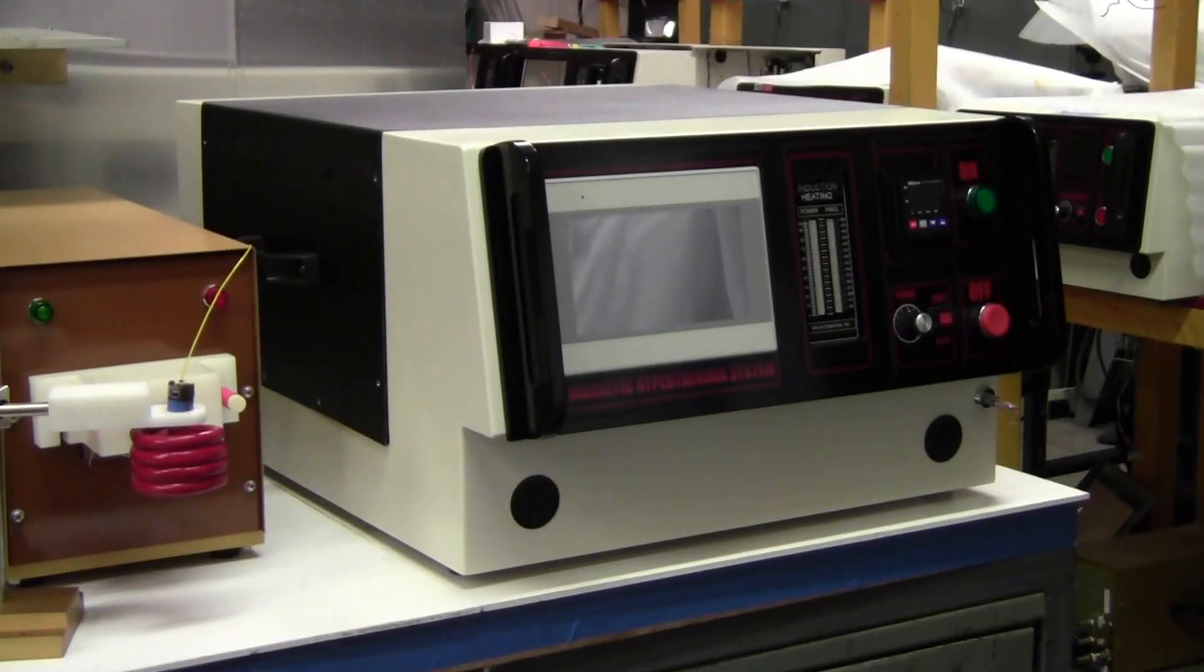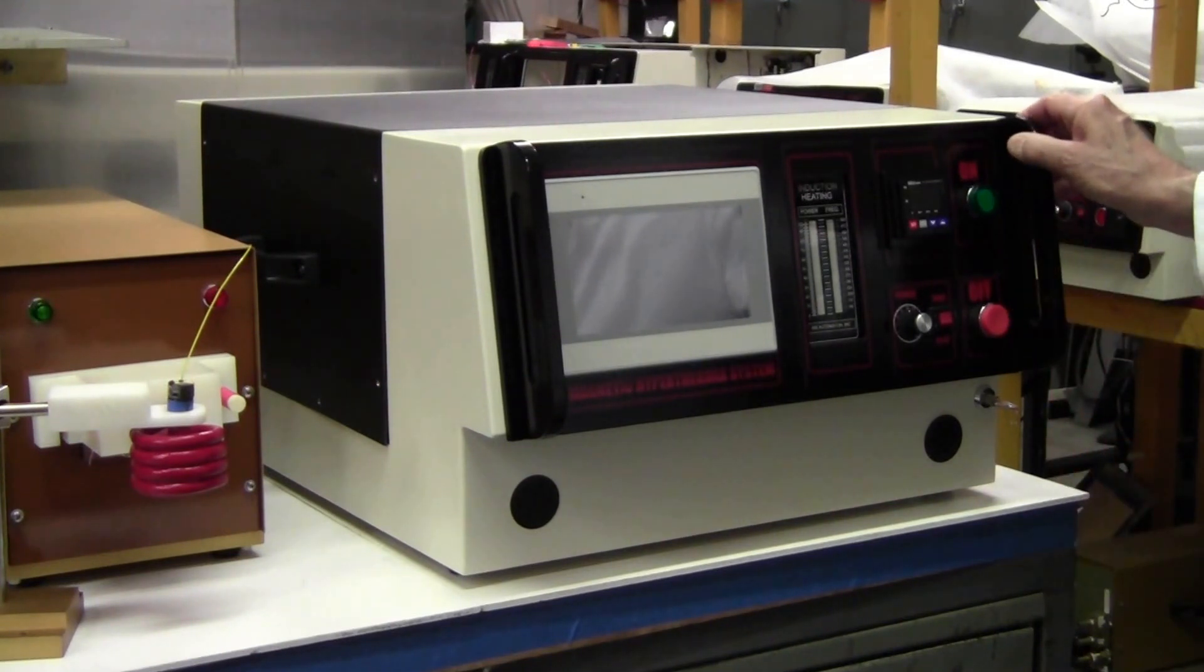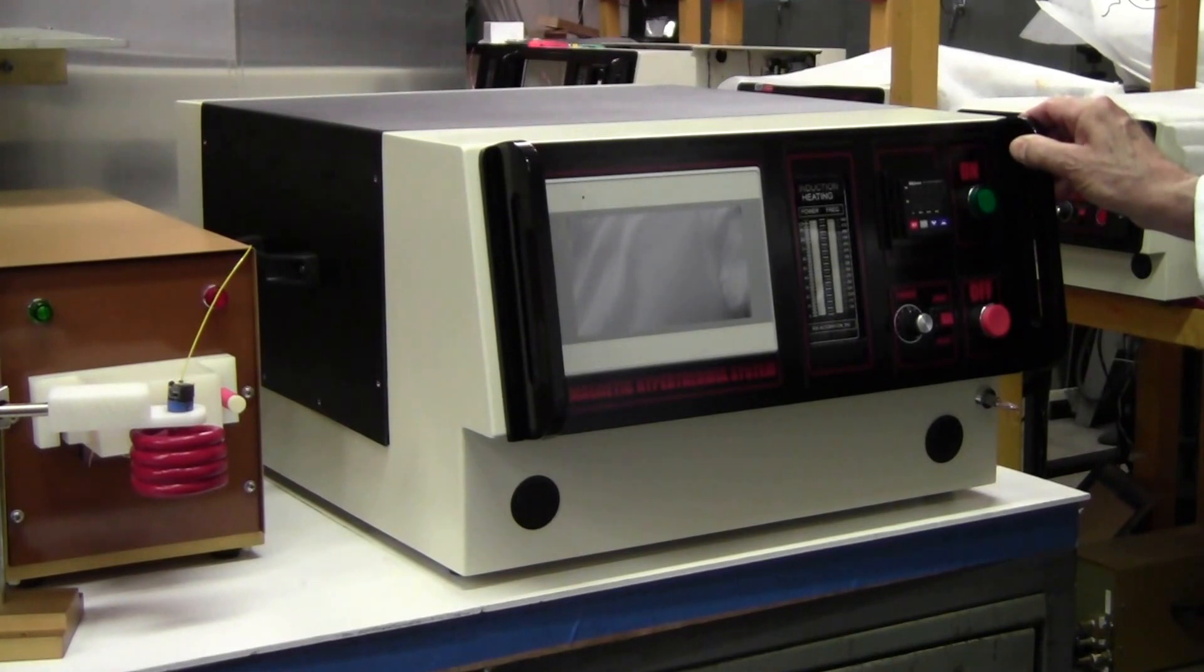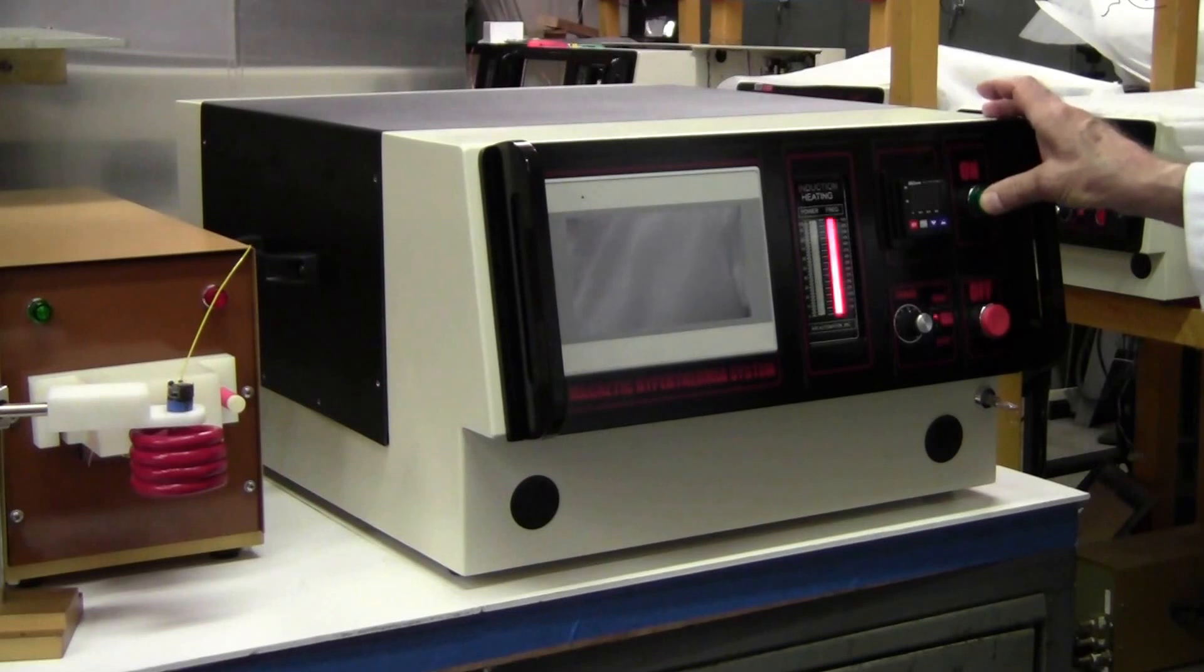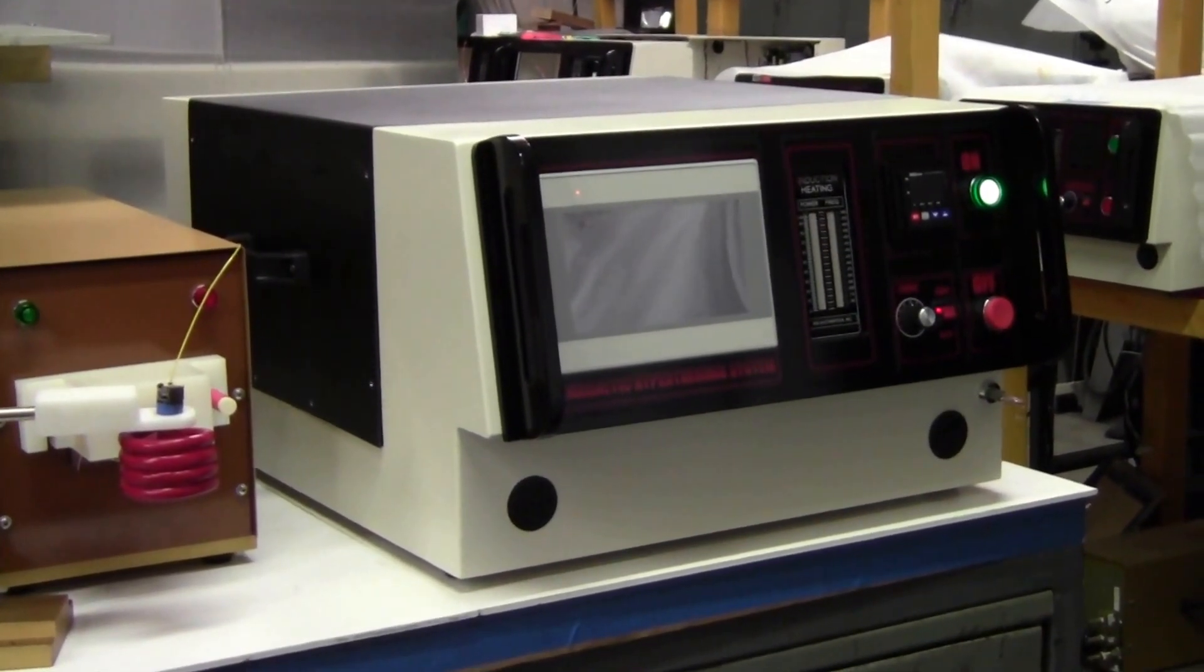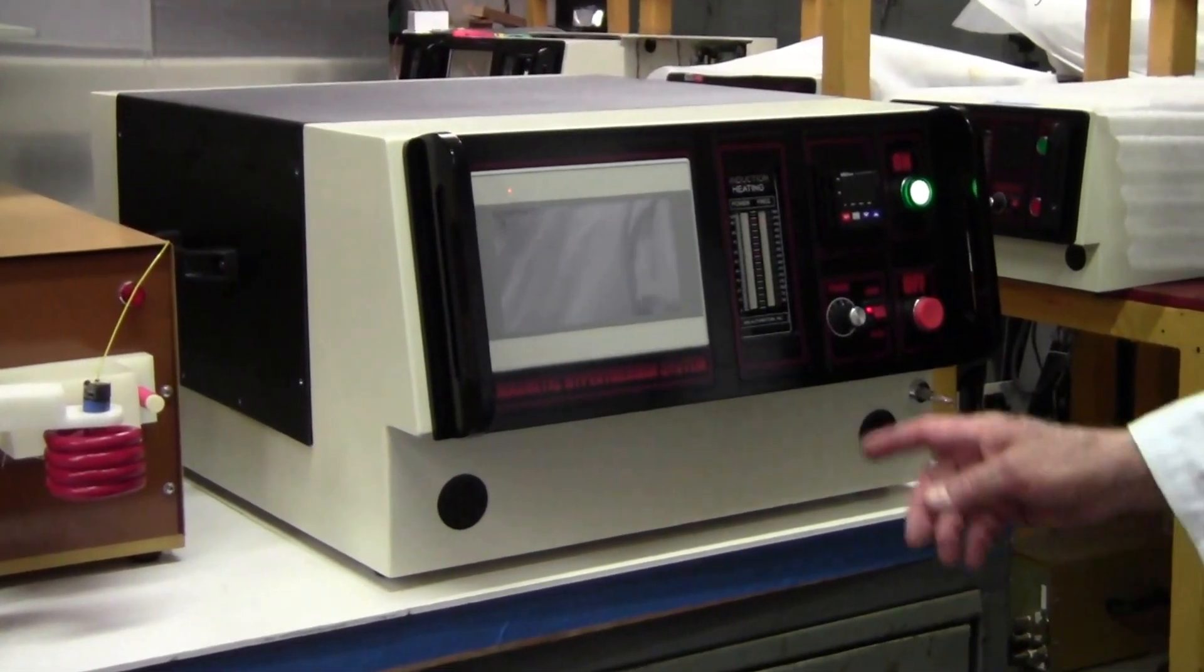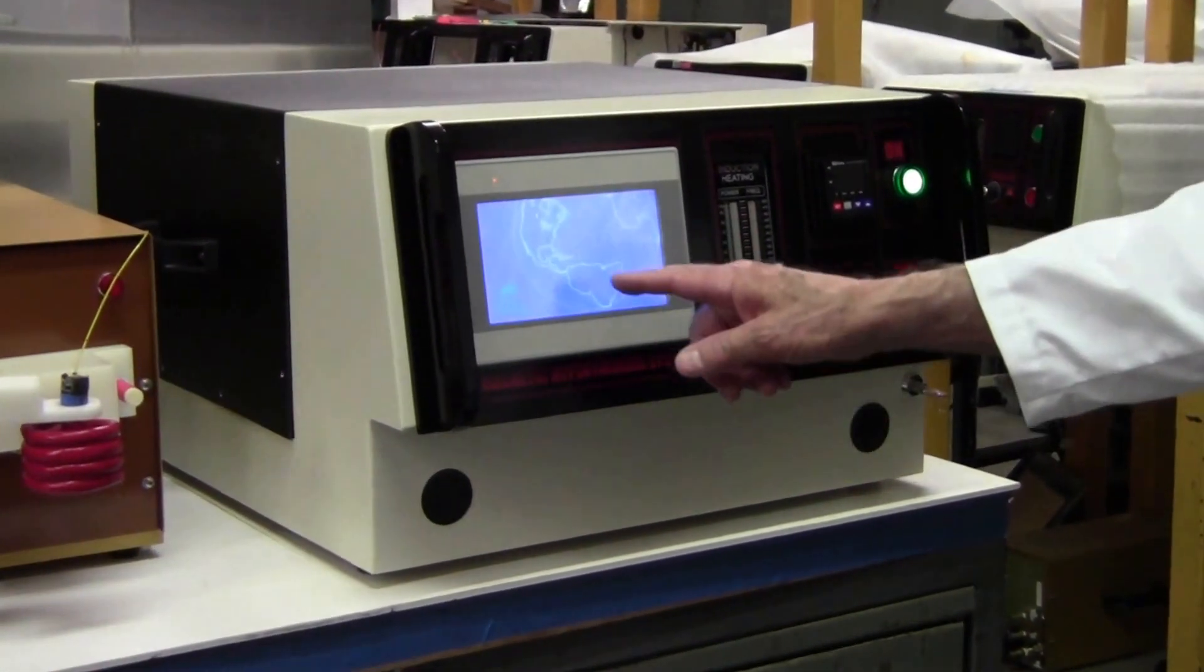This is an MSI automation magnetic hypothermia instrument, and what we'll be demonstrating is heating and some of the controls that you have. I'll press the green button and that turns on the machine. Now it will go through a startup procedure. First, it'll turn on the color touchscreen.